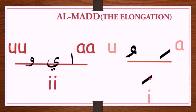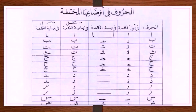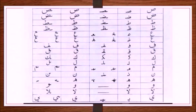Now I shall explain how these A, E, and U sounds do become long Ā, Ē, and Ū sounds. The elongation of the vowels takes place by adding the long vowels alif, waw, and ya to the letters. They are added to the letters like any other letters are added to one another, as I explained in the last two sessions.